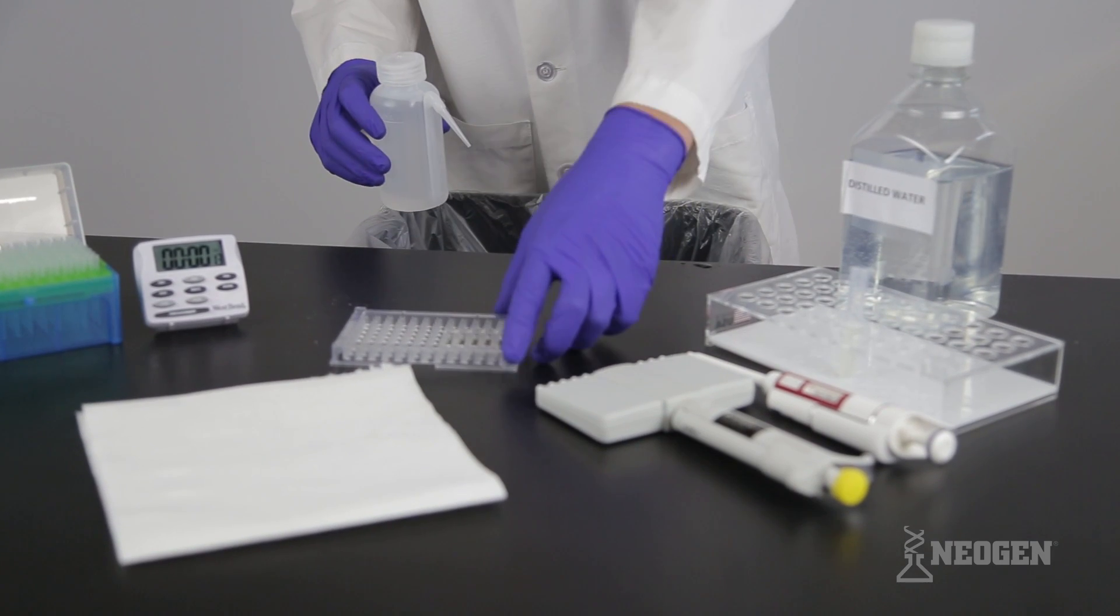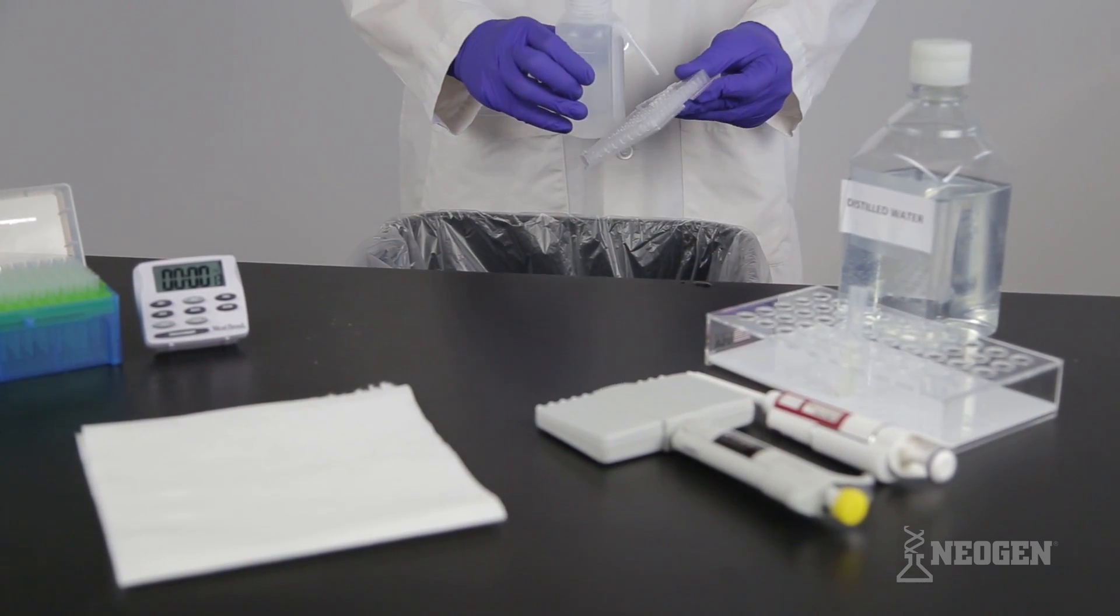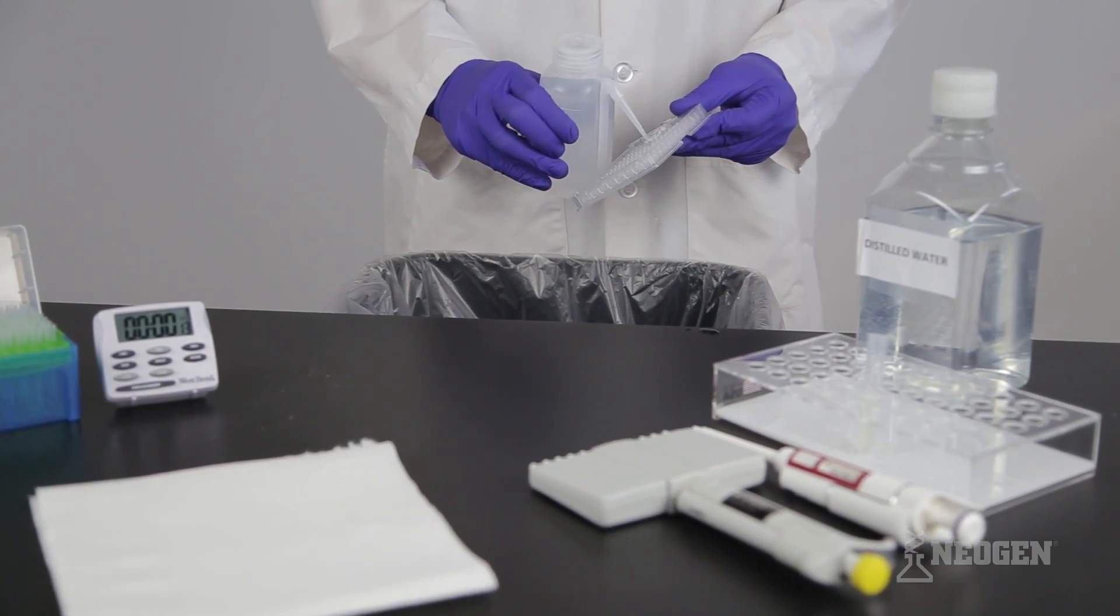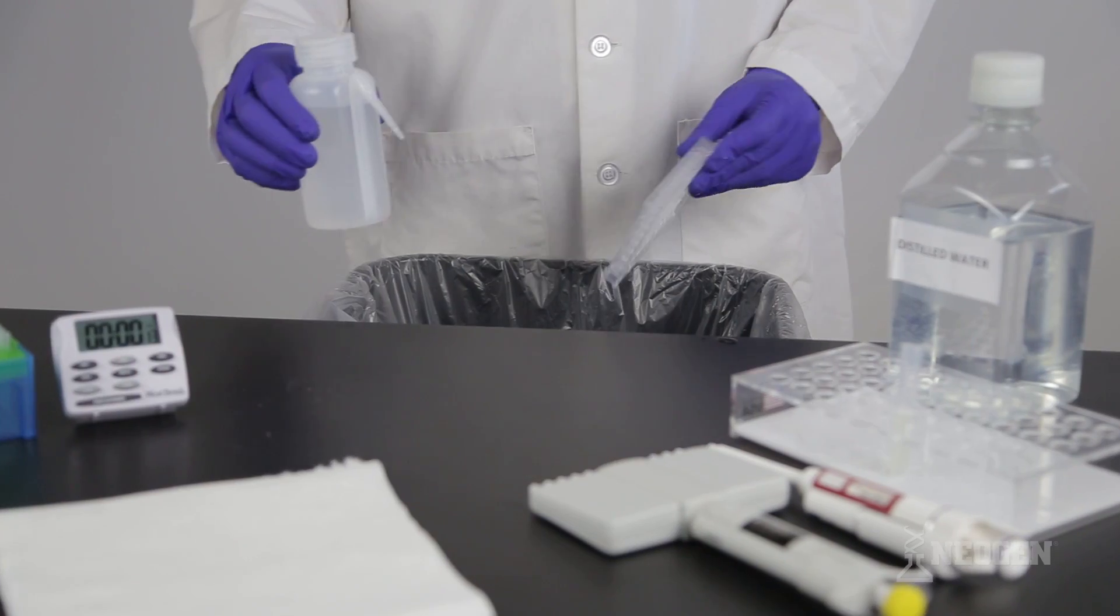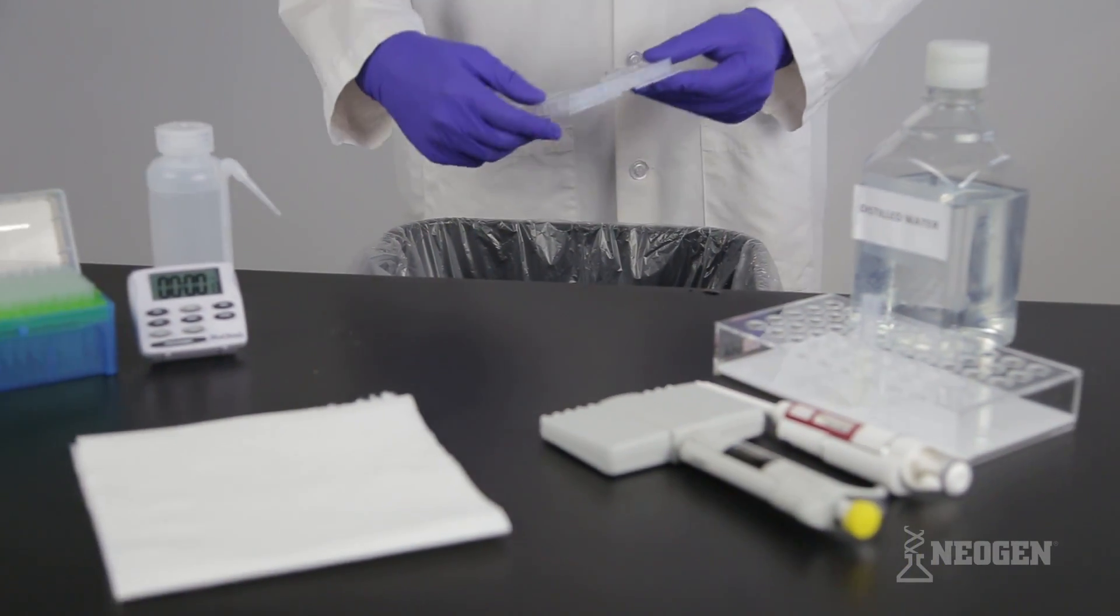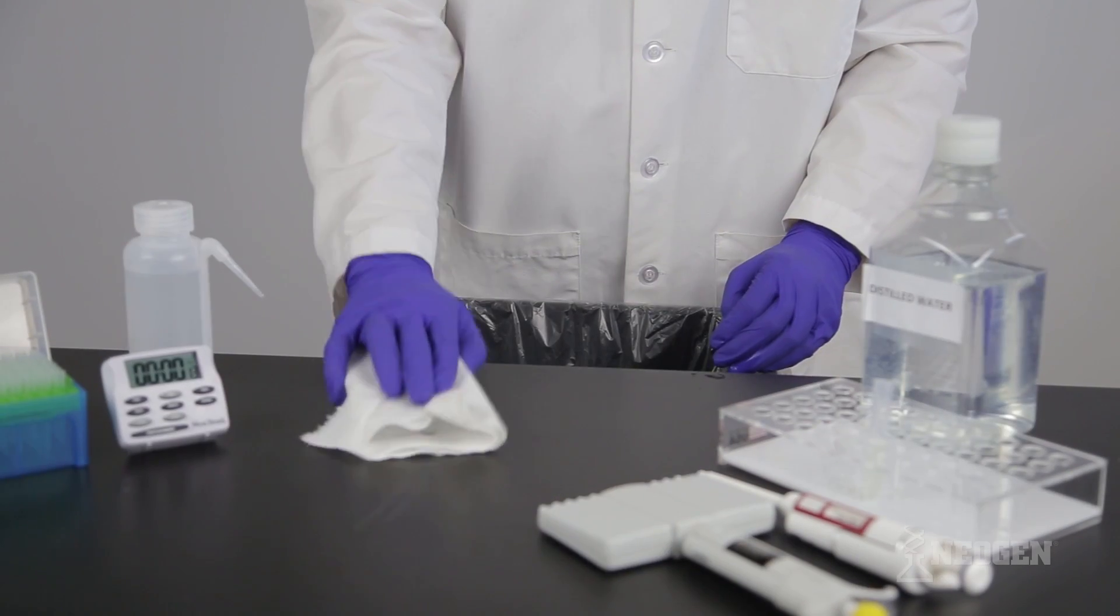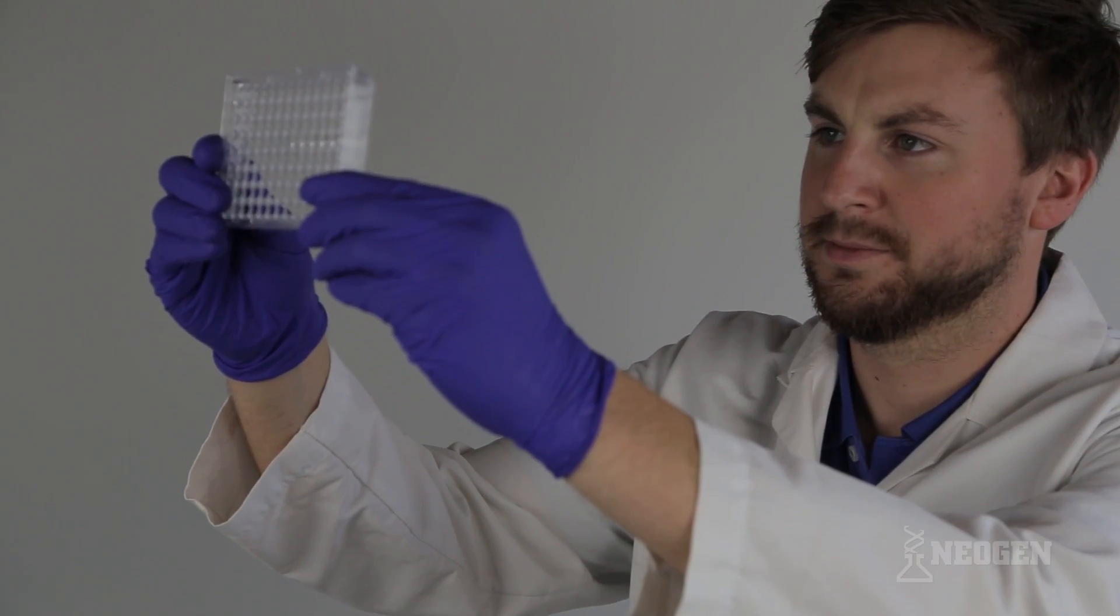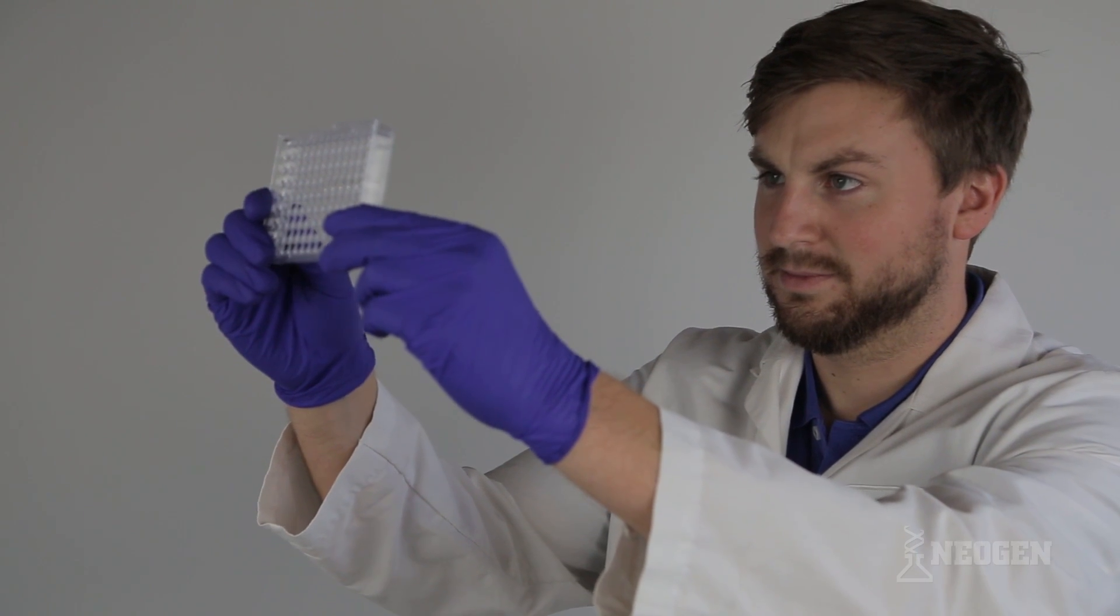At the end of the five minute incubation, shake out the contents of the microwells. Fill the wells with distilled or deionized water and shake out. Repeat this step five times, then turn the wells upside down and tap them out on a paper towel until the remaining water is gone. Check for excess water or bubbles. If present, tap again to disperse. Do not put anything in the well or blow air into the wells.